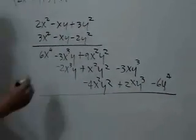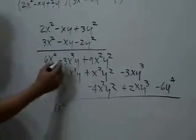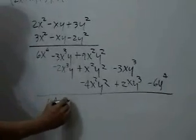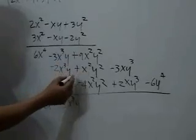And then we add, bringing down 6x to the fourth. Negative 3 and negative 2 is negative 5x³y. 9 plus 1 is 10, minus 4 is 6x²y².